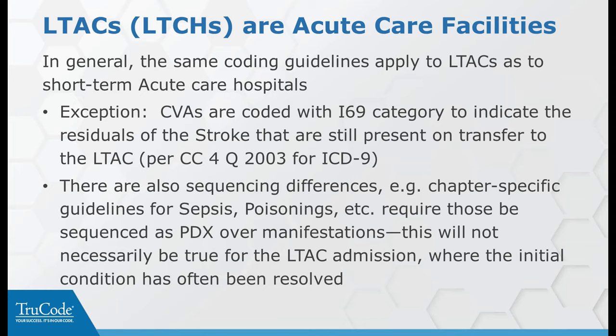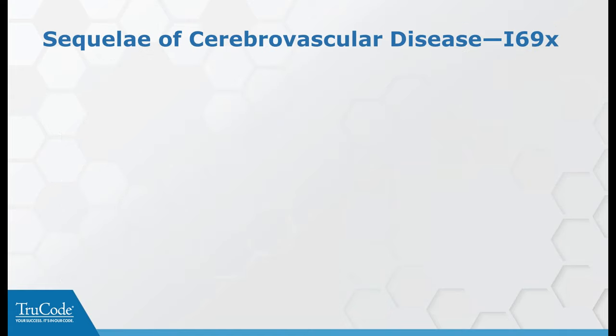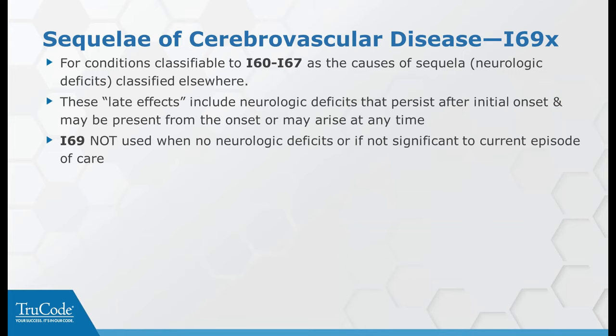However, once admitted to the LTCH, most of those conditions have already been treated prior to admission, so you're not necessarily sequencing things the same way. Often, if they've come in with respiratory failure as a result of a poisoning or sepsis, that's what the LTCH is focusing on, so respiratory failure would end up being the principal diagnosis for the LTCH admission. For the I-69 category with CVA residuals, those late effects still being treated in the LTCH or SNF setting related to that stroke are captured in that combination I-69 code. If there are no residuals to be treated, code a Z code showing history of stroke instead of the I-69 category.